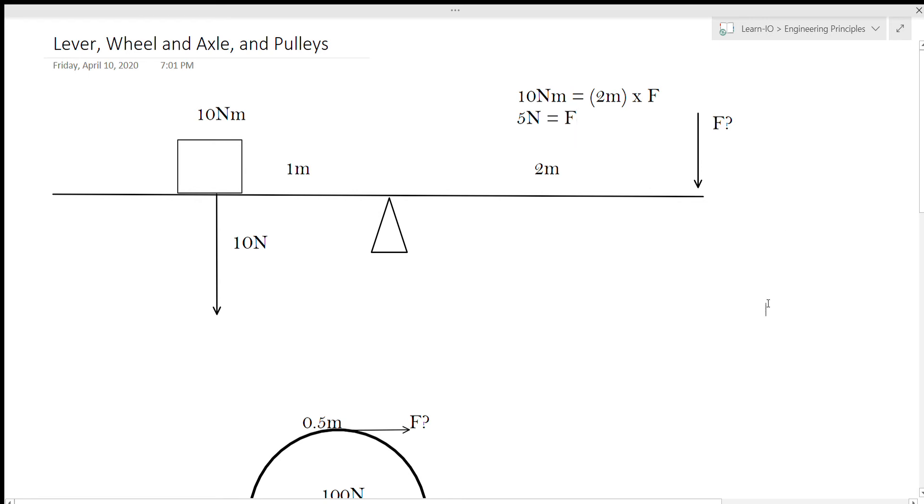As you can see, 5 newtons is half the amount of force that's being applied on the other side of the lever. That's basically how levers work - that's how they give us mechanical advantage. The further away you are from the fulcrum, the more torque you're providing with the same amount of force.